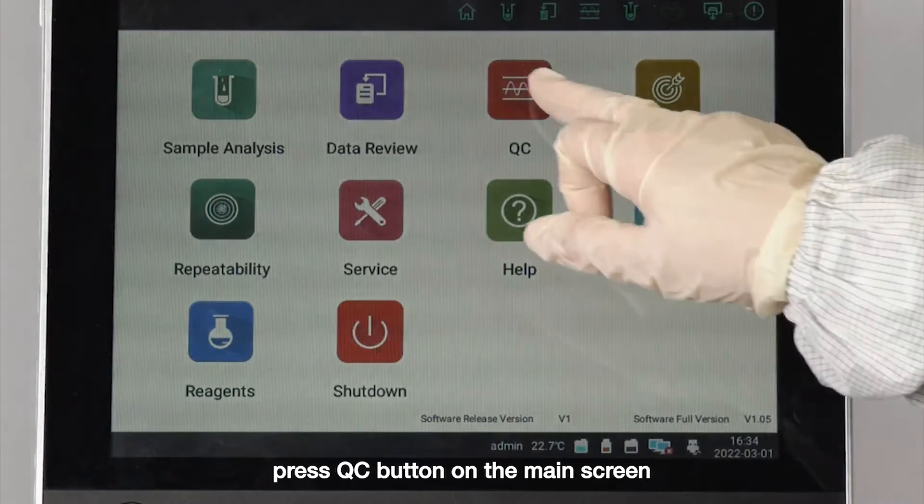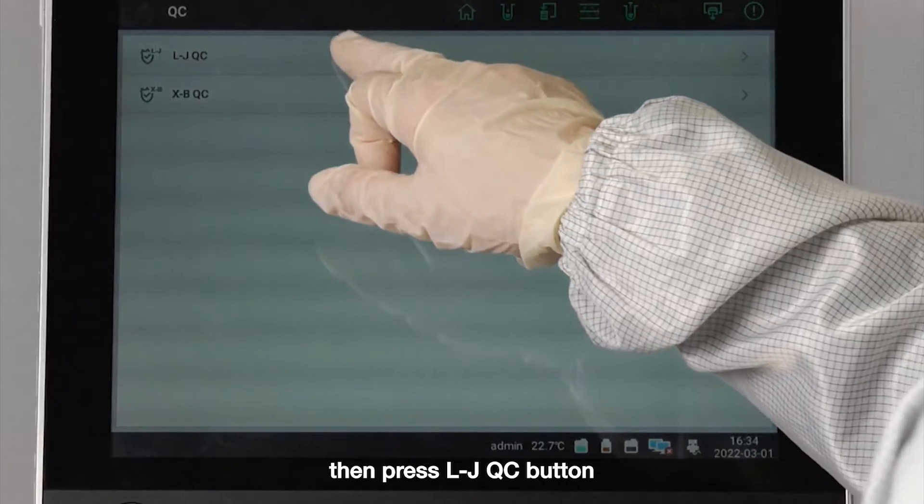Press quality control button on the main screen, then press LJ quality control button.